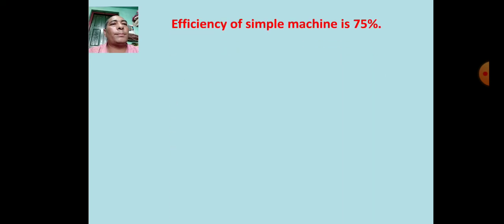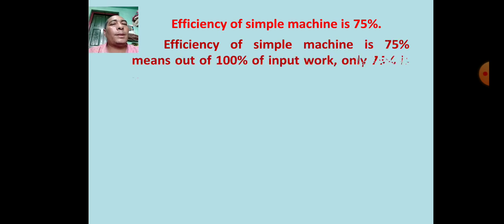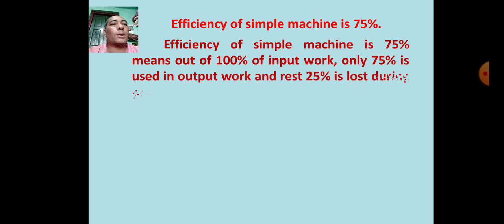If efficiency of a simple machine is 75%, it means out of 100% of input work, only 75% is used in output work, and the rest 25% is lost during production of heat by friction.